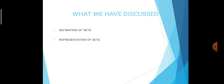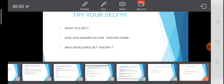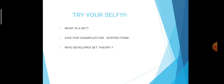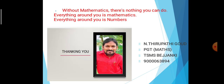So what have we discussed today? Definition of set: a collection of well-defined objects. Representation of sets: two ways — roster form and set builder form. Try yourself: What is a set? Give a few examples of roster form. Who developed set theory? Without mathematics there is nothing you can do — everything around you is mathematics, everything around you is numbers. Thank you.